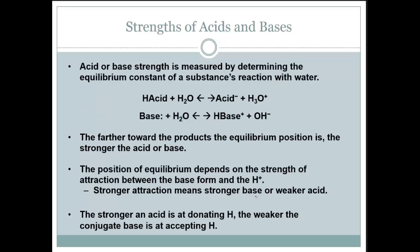Acid or base strength is measured by determining the equilibrium constant of a substance's reaction with water. For instance, here is an acid reacting with water. Notice that H goes away to produce H3O+. Here is the base reacting with water and it absorbs the hydrogen to form OH-.